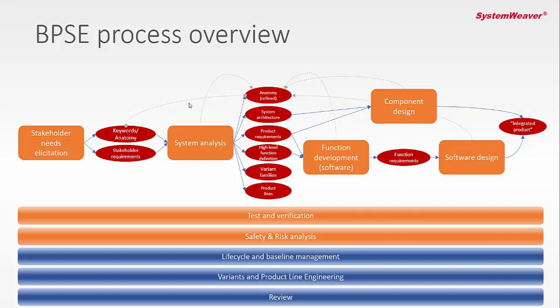We also use keywords to relate all the information developed during the complete process flow. By connecting information such as requirements, test cases, functions, and so on to the anatomy or keyword list, we can find information related to any downstream activity. For instance, when system analysis writes product requirements on the adaptive cruise control function, you connect that to the function ID of adaptive cruise control. The function development side can then look at all the requirements and incoming analysis done in the upstream activities.